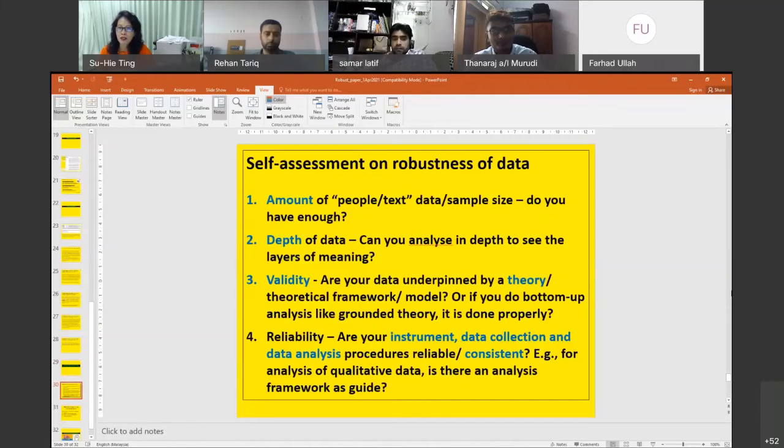This is the last one, and only you can judge on the robustness of your data. Some people think that when they finish their masters, two years of coursework, and want to do a PhD that takes four years, they just double the number. If before I used 200 participants, now I use 400 as PhD standard. Sorry, no. It's not just amount of data, although the amount is important.